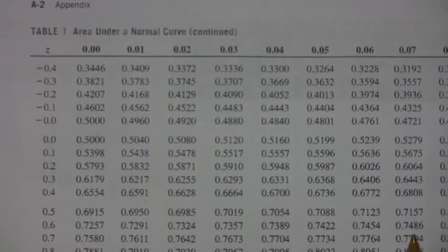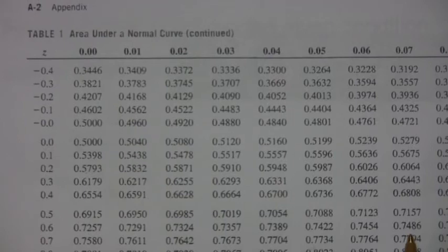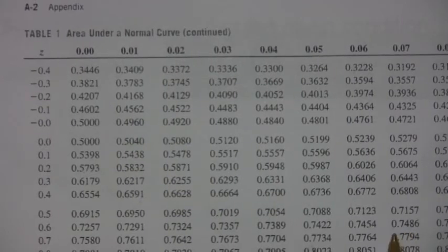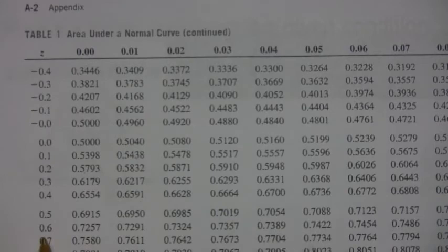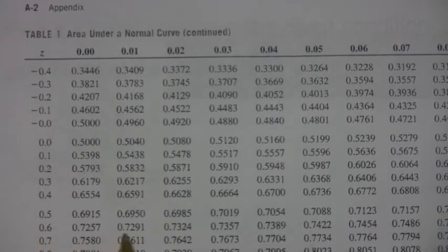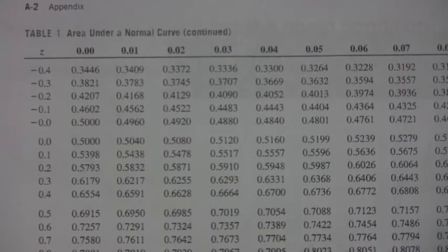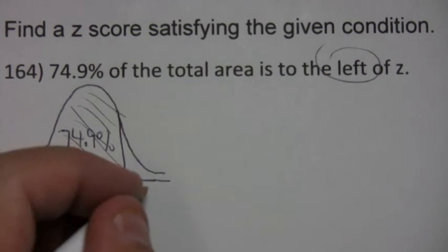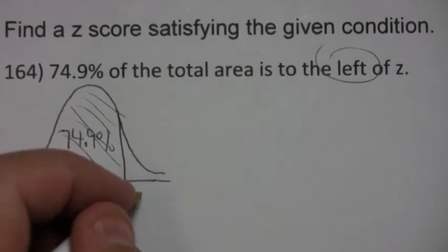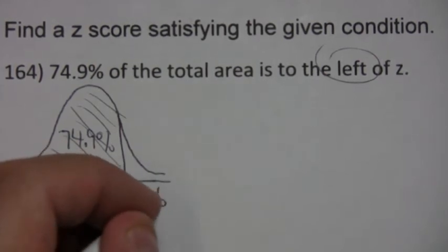And if you cross reference it back over to the left, that is 0.6. So it's 0.6 and going up 0.67. So z equals 0.67.